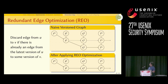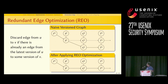Our first optimization technique is redundant edge optimization. If there is already an incoming edge from the latest node to the current node, then any future redundant edges can be discarded. For example, since there's already an edge from S2 to G3, we can discard the edge from S2 to G5, reducing the number of versions. The same applies to node T.